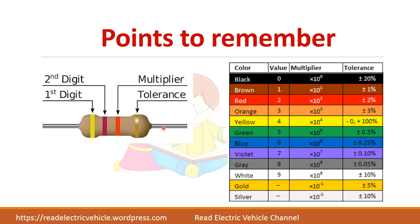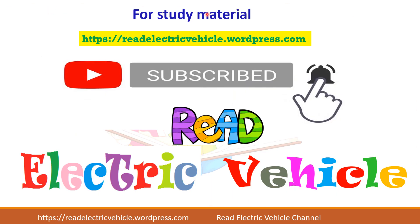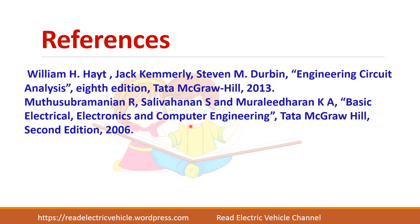The points to remember: for a four-band resistor, the first two bands give the first two digits, the third band is the multiplier value, and the fourth band is the tolerance. Remember the sequence using the mnemonic: B B Roy Great Britain Very Good Wife. For study material, visit the website linked below. If you like the video, please subscribe to our channel. Thank you.